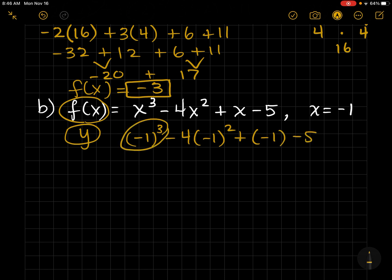So, that's an odd exponent. So, the negative stays. And now, we've dealt with all the exponents. So, that's negative one minus four minus one minus five. So, I can just combine all that together for negative 11. And that's what f of x equals.